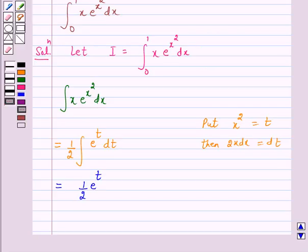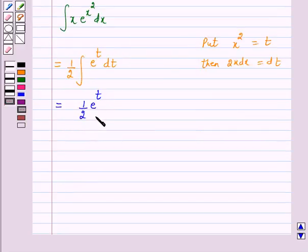Now, here, we will resubstitute for the variable t, that is, this is equal to (1/2) e^(x²).